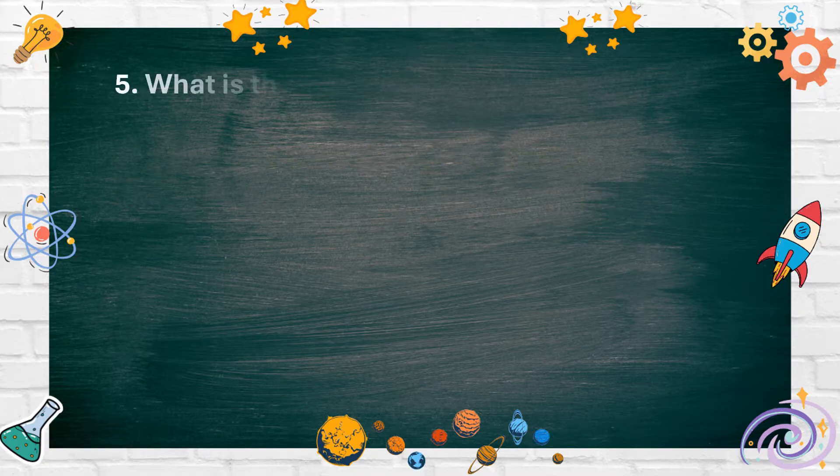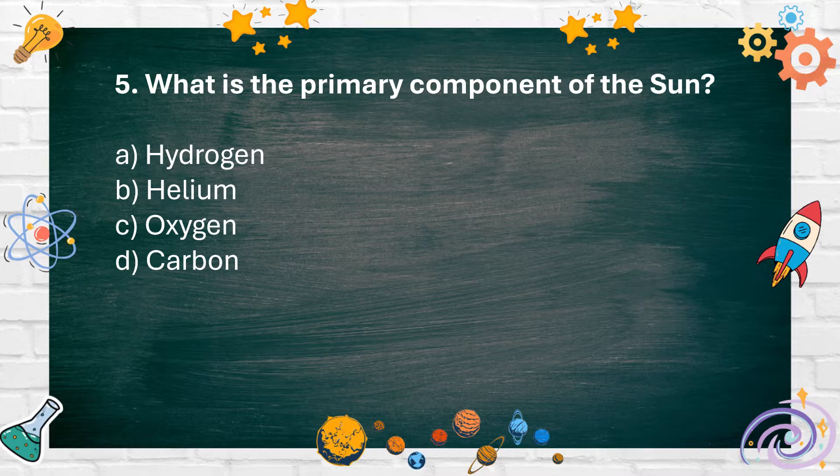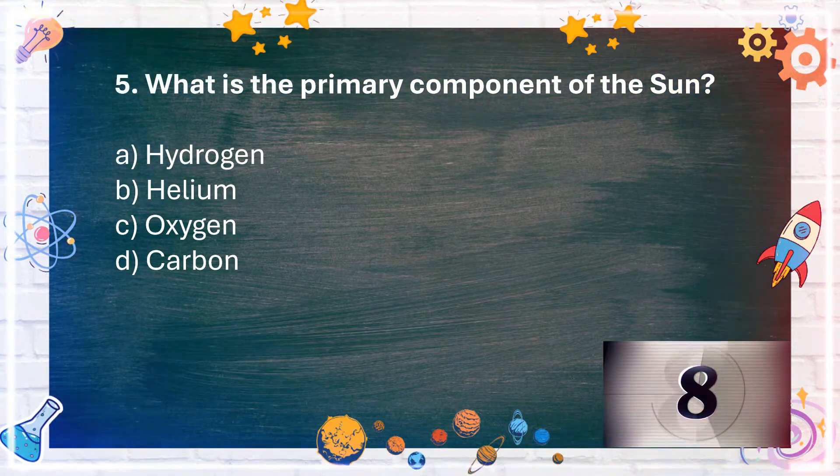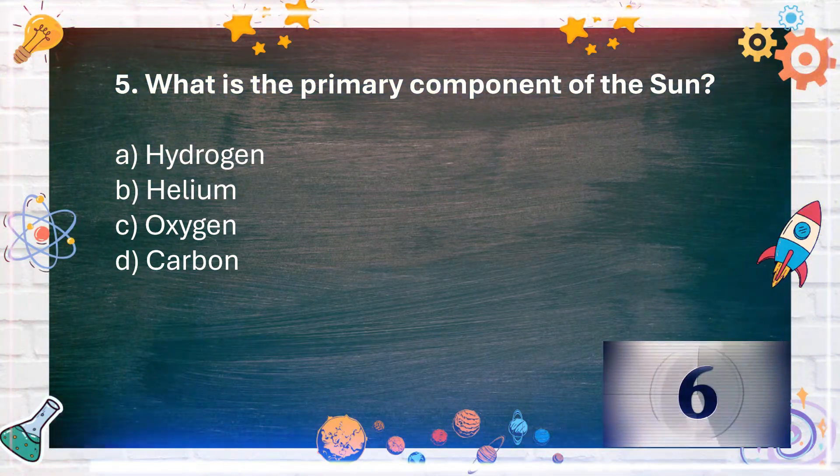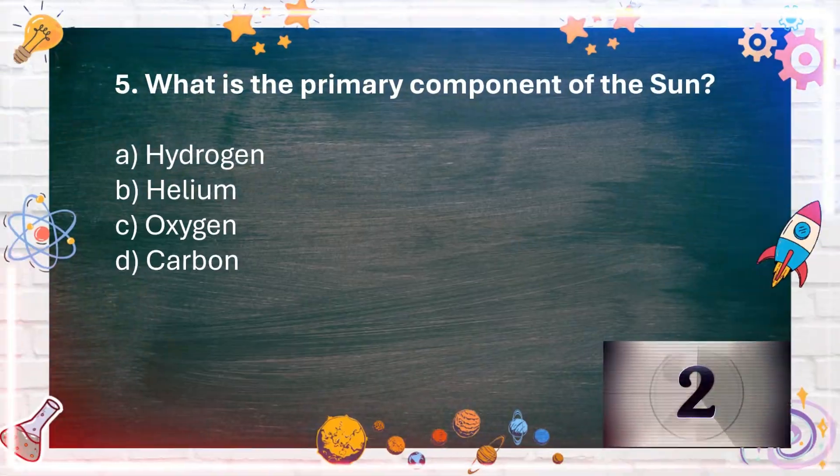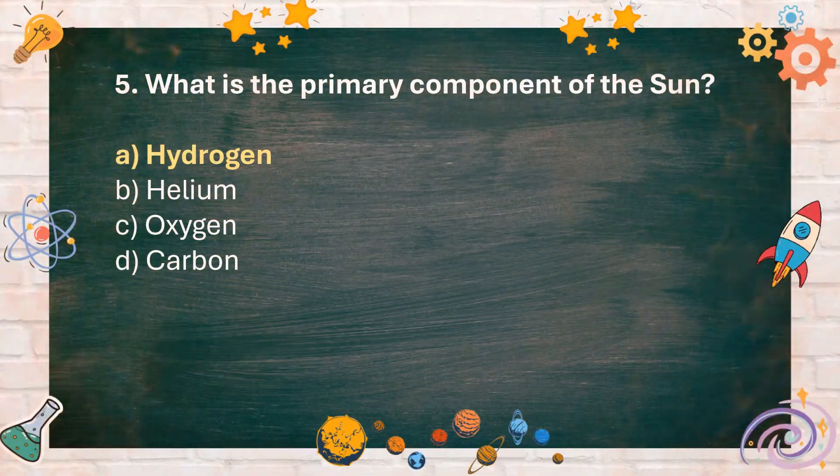Number 5: What is the primary component of the sun? A. Hydrogen, B. Helium, C. Oxygen, D. Carbon. The answer is A. Hydrogen.